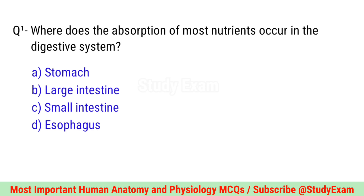Question number one. Where does the absorption of most nutrients occur in the digestive system? Correct option is C. Small intestine.